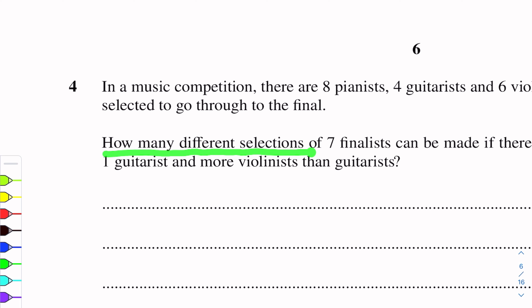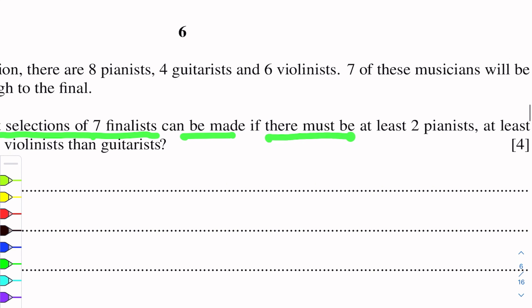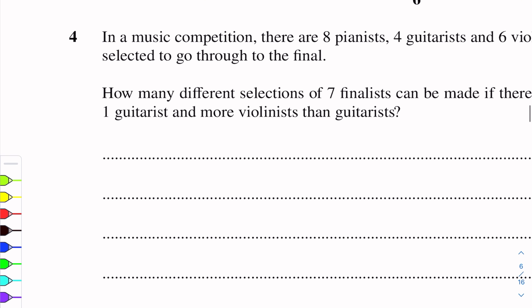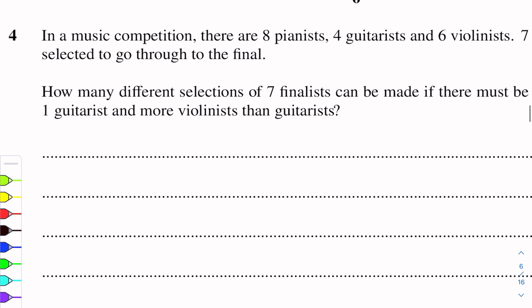How many different selections of 7 finalists can be made if there must be at least 2 pianists, at least 1 guitarist and more violinists than guitarists? Since the word 'selected' is used here, this question is of combination, not of permutation.